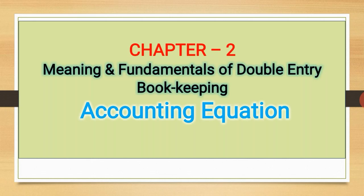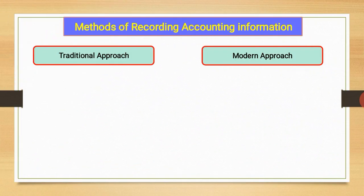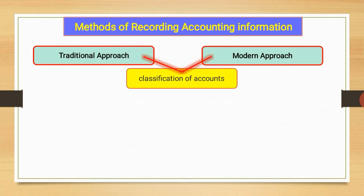Friends, we understood classification of accounts, traditional approach and modern approach of accounting, and also got familiar with golden rules. We understood methods of recording information. There are two approaches to record accounting information: the traditional approach and the modern approach. We also understood the classification of accounts according to both approaches.